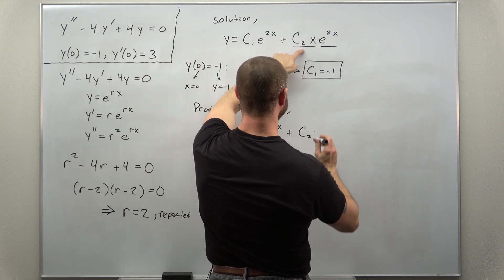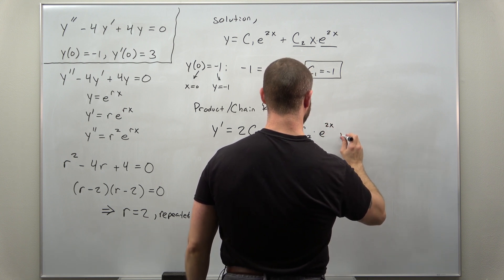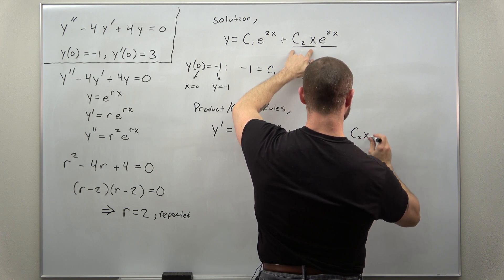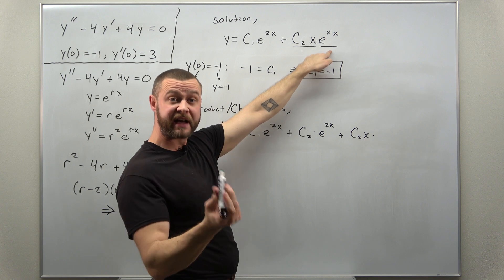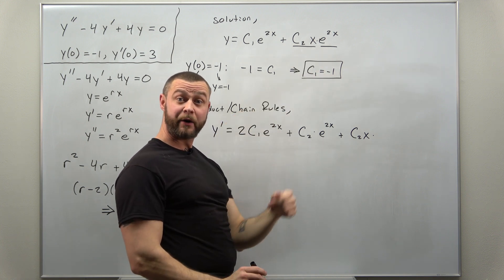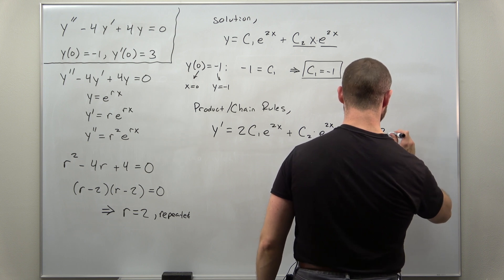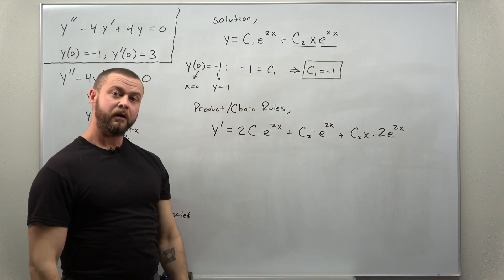Differentiate the first term. That's gonna leave me with c2 times e to the 2x, and then we add to that keeping the first function the same. So c2x, and now we differentiate the second function. That's where the chain rule comes in. That'll give us 2 e to the 2x.